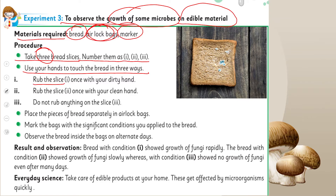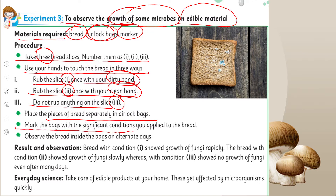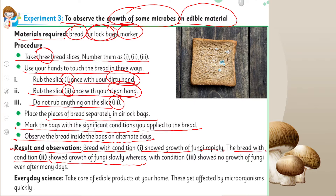Use your hands to touch the bread in three ways: rub slice number one with your dirty hands; rub slice number two with your clean hands; and do not rub anything on slice number three. Place the pieces of bread separately in airlock bags and mark the bags with the significant conditions you applied. Observe the bread inside the bags on alternate days. Result: bread with condition one showed rapid fungal growth; condition two showed slow growth; condition three showed no growth even after many days. Everyday science — take care of edible products at home as they get affected by microorganisms.